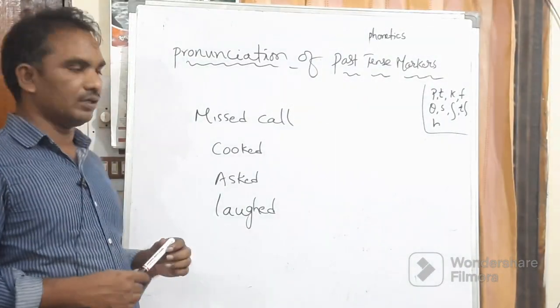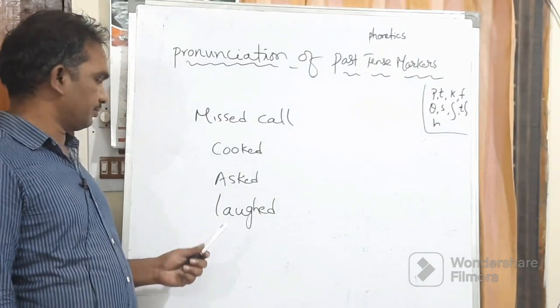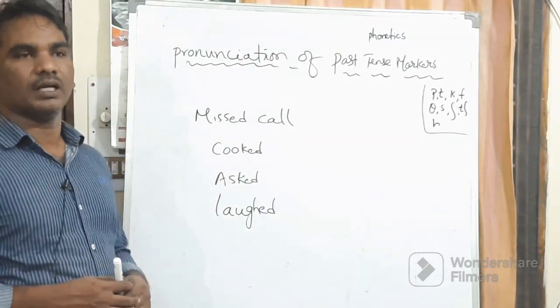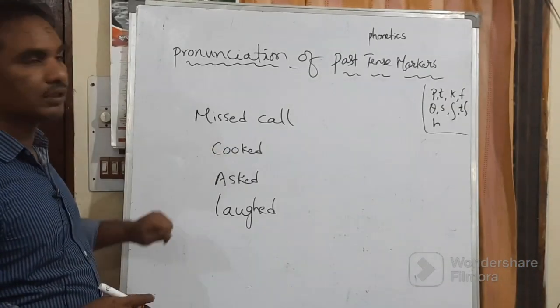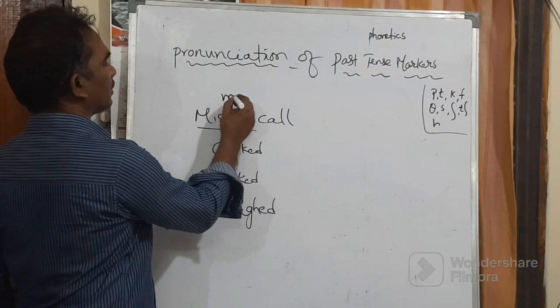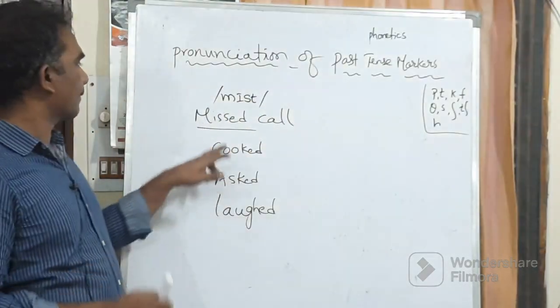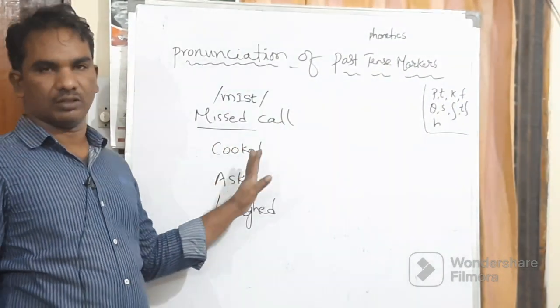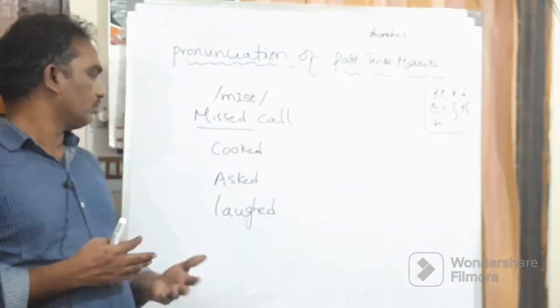Let's look at the second word — this is used as 'kukkudu,' 'askkudu,' 'laughed.' So let's look at these words which are frequently mispronounced. This word is actually 'missed call,' okay? So if you transcribe this word, you transcribe it like this: missed call — not 'misud' call.